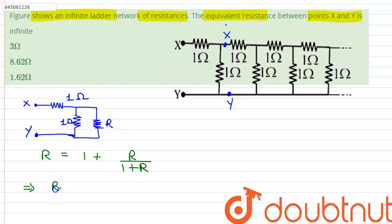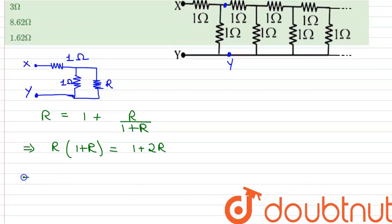Thus we can rewrite this equation as R multiplied by 1 plus R is equals to 1 plus twice of R. And on rearranging this equation, we find out that R squared minus R minus 1 is equals to 0.